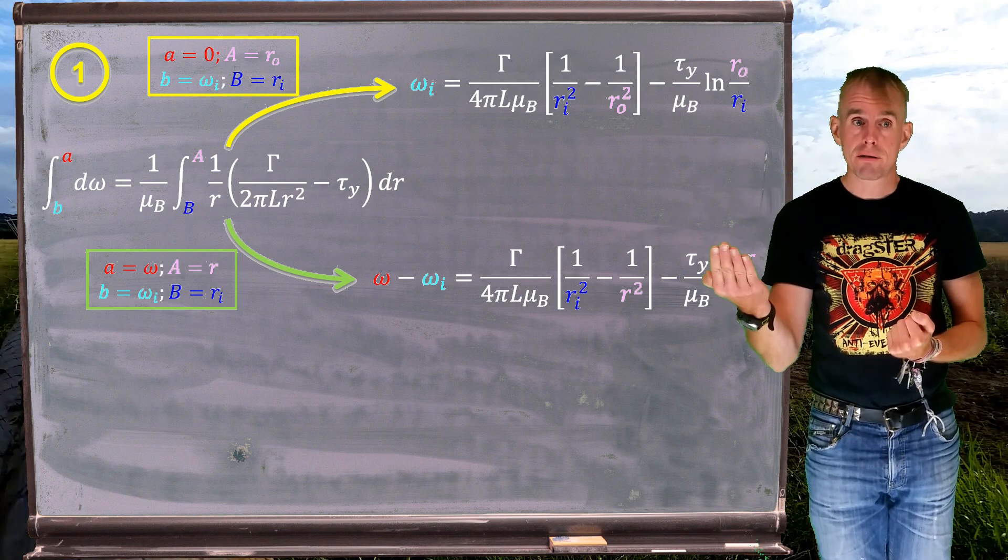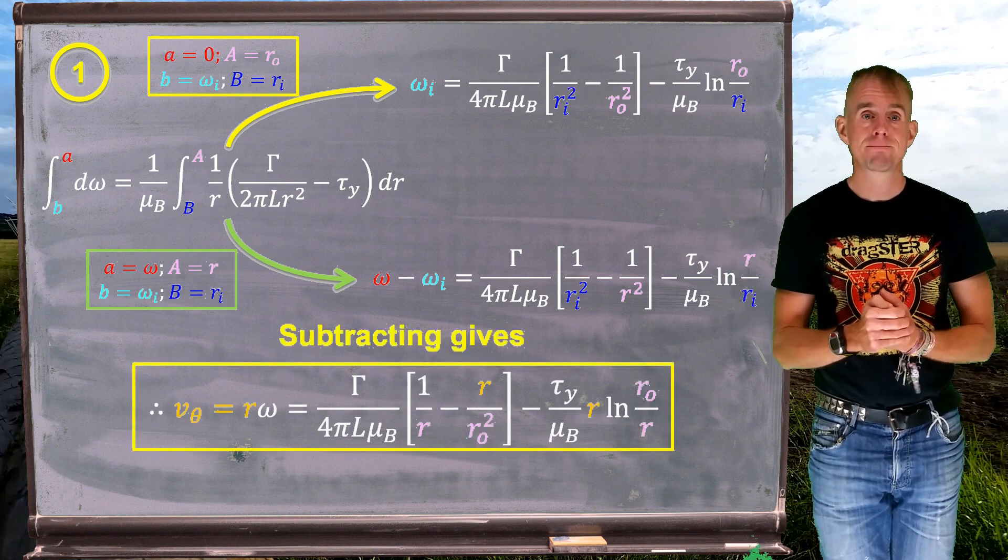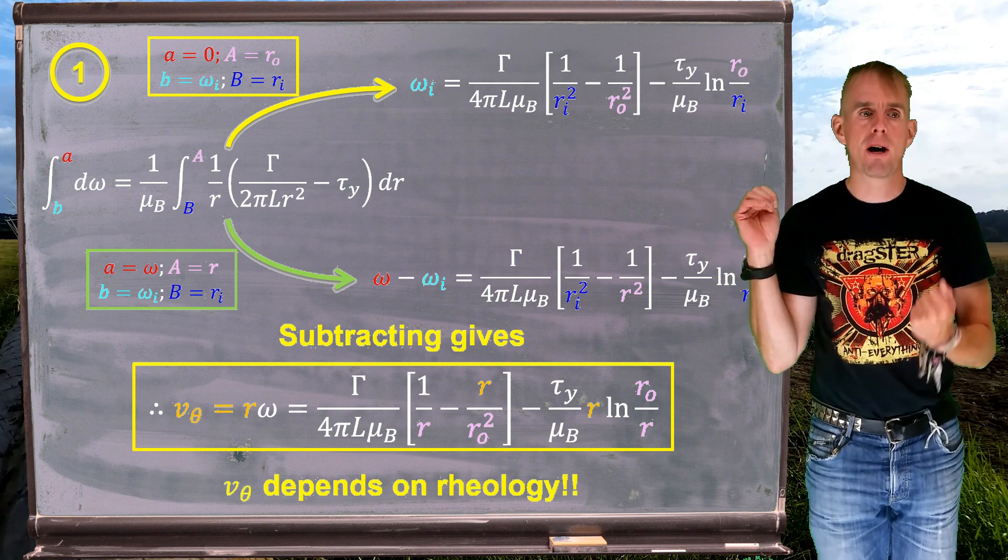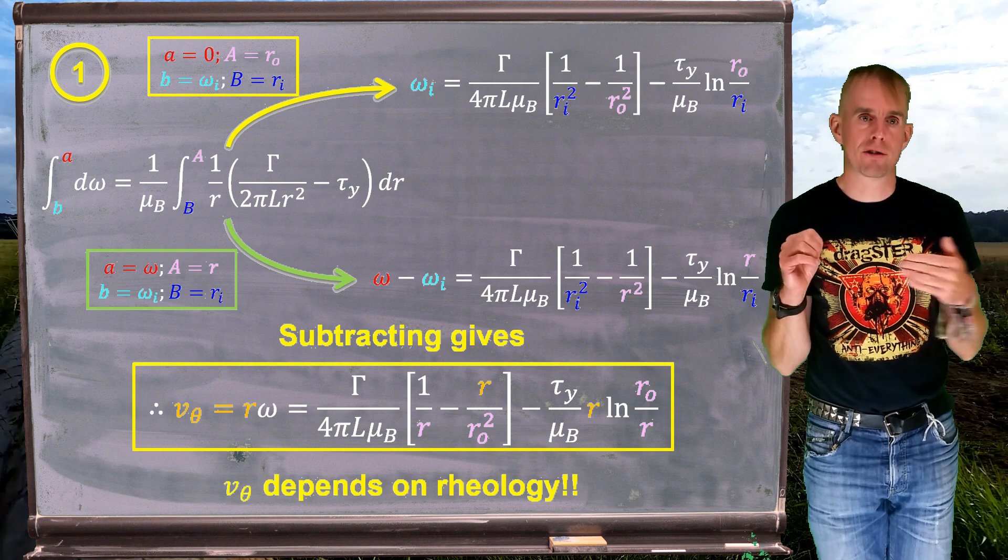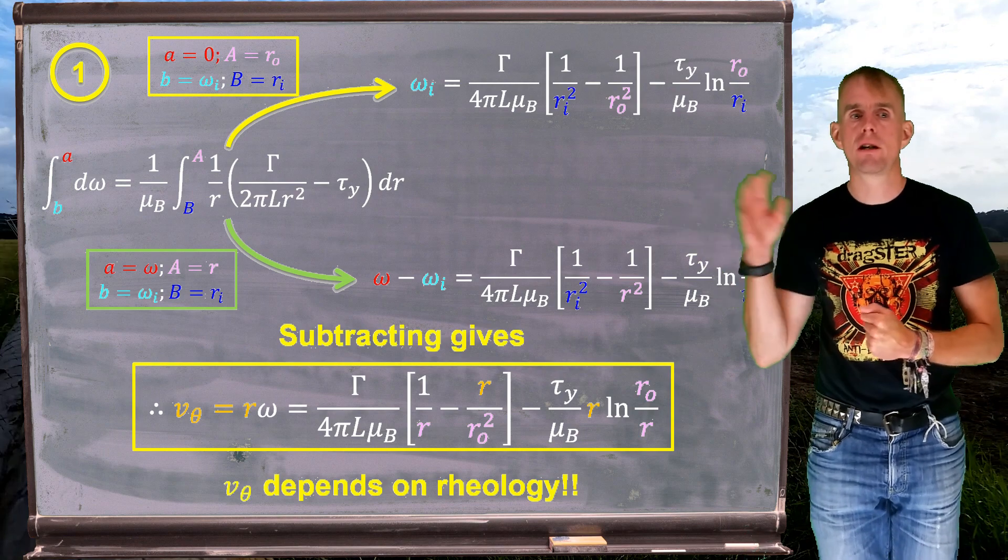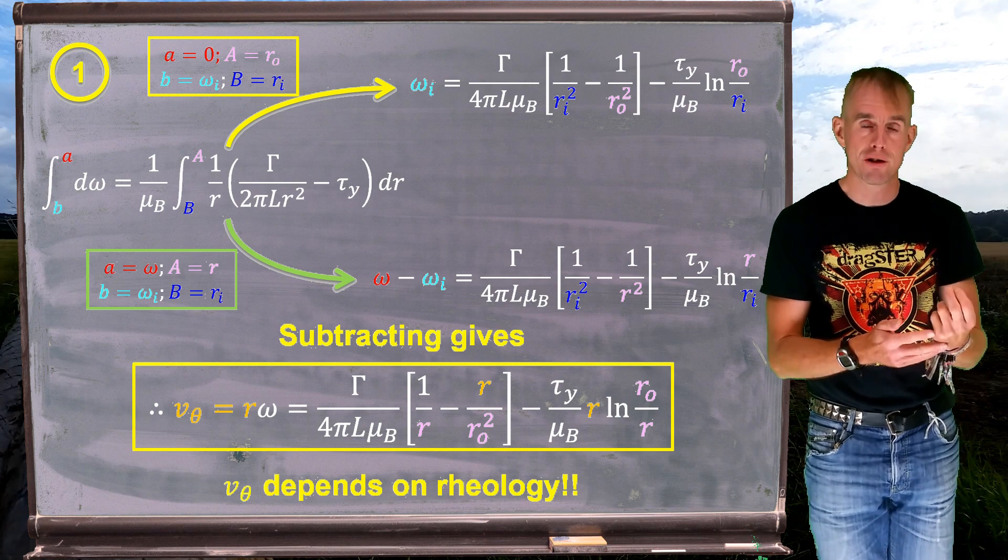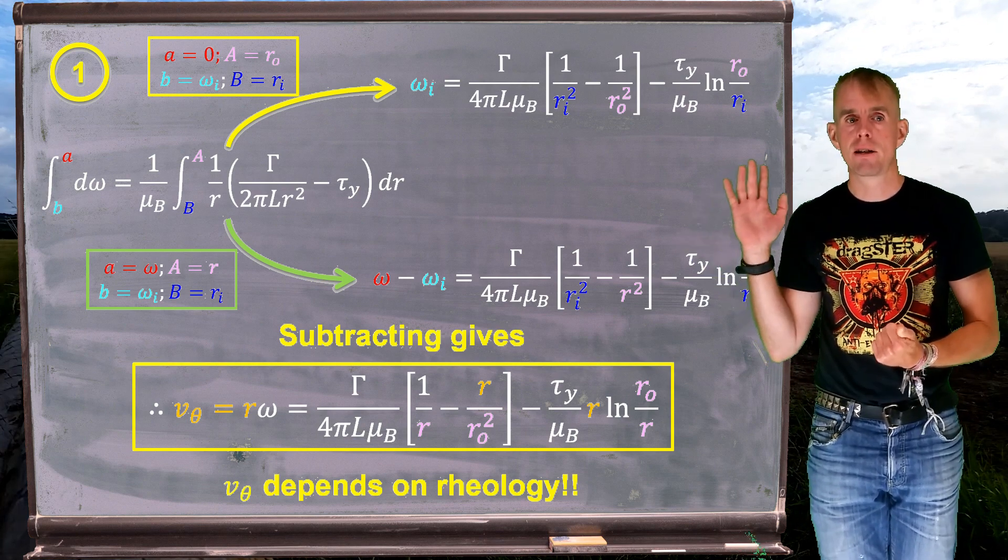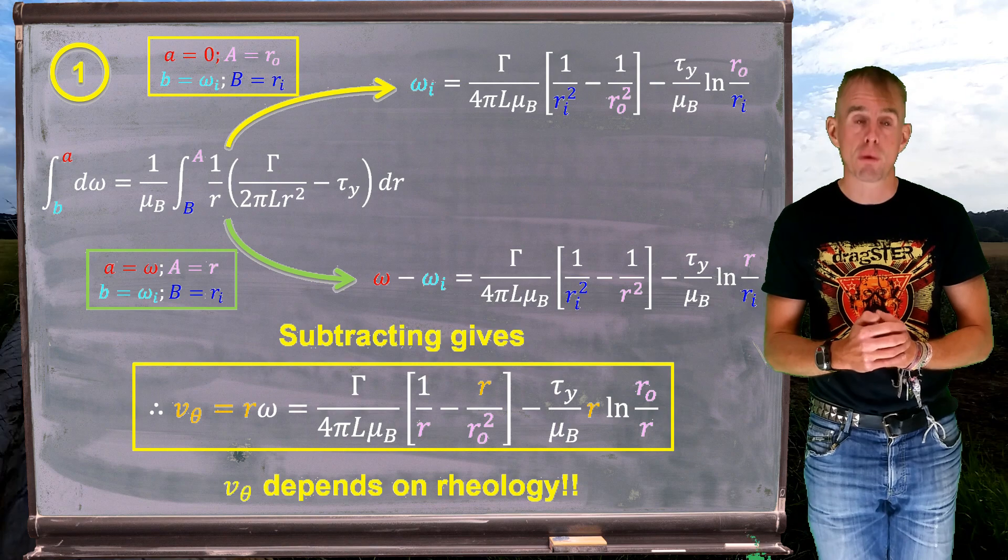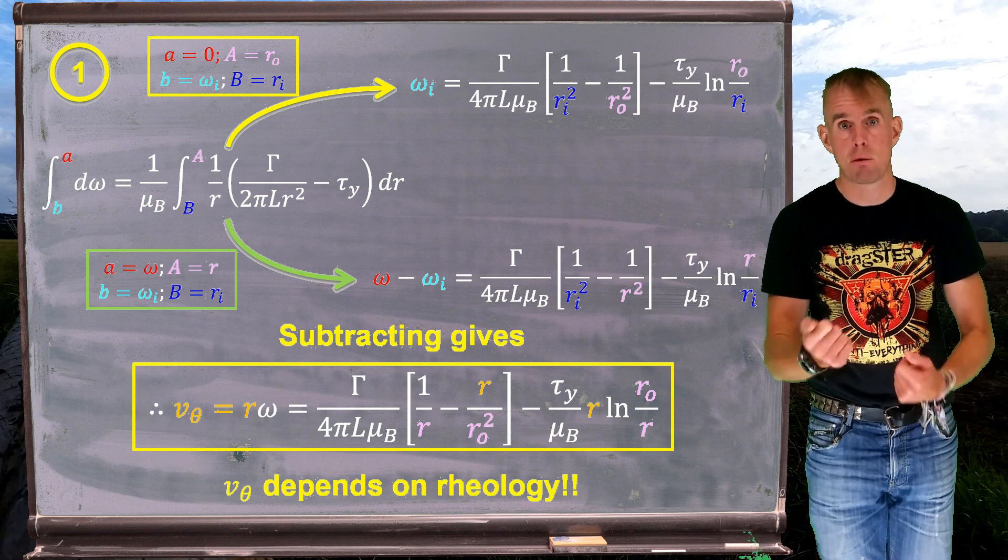If I subtract those two results, I end up with omega as a function of r. So I'm going to do that. Furthermore, I'm going to recognise that r omega is v theta, and therefore I have an expression for my tangential velocity, my rotational velocity, v theta, as a function of rheology and geometry. So unlike the Newtonian result, which was solely a function of geometry, we have a result here that is dependent on rheology, much as the power law result, when we looked at generalised Newtonian fluids, was also dependent on rheology. So we now have an expression that involves mu b and tau y.